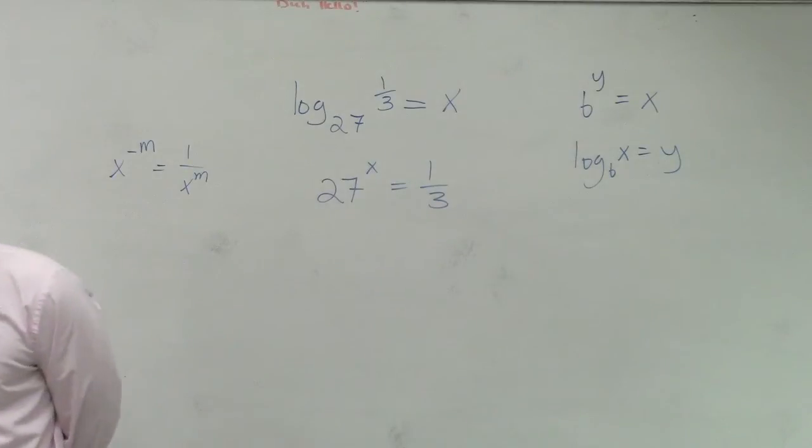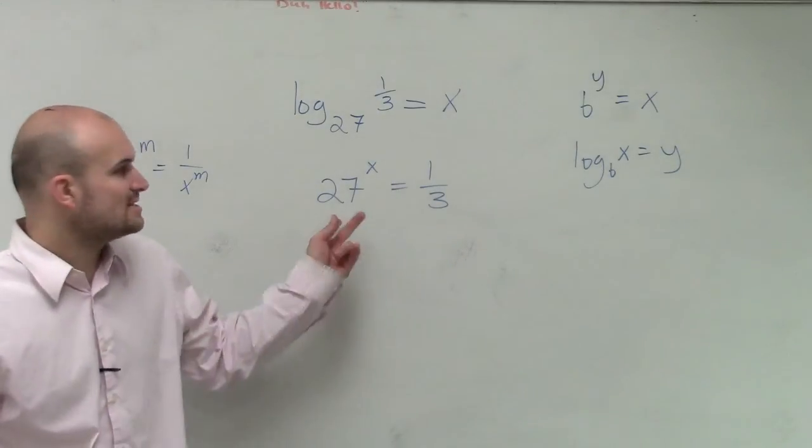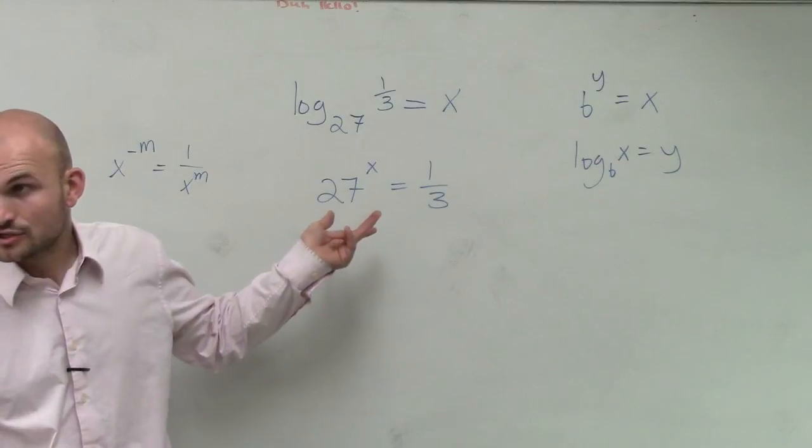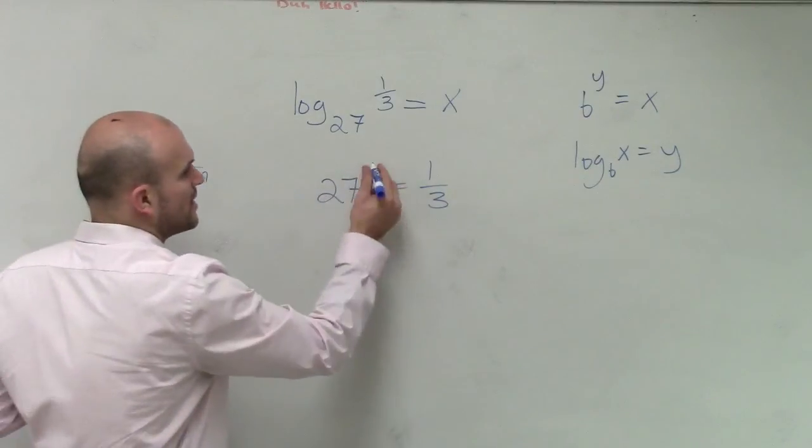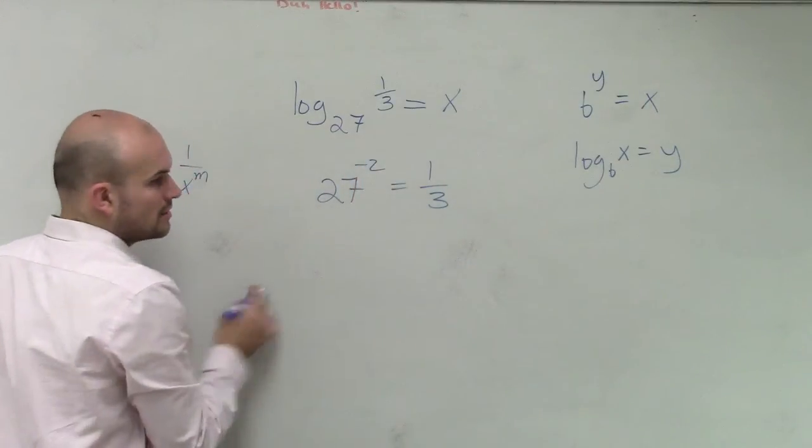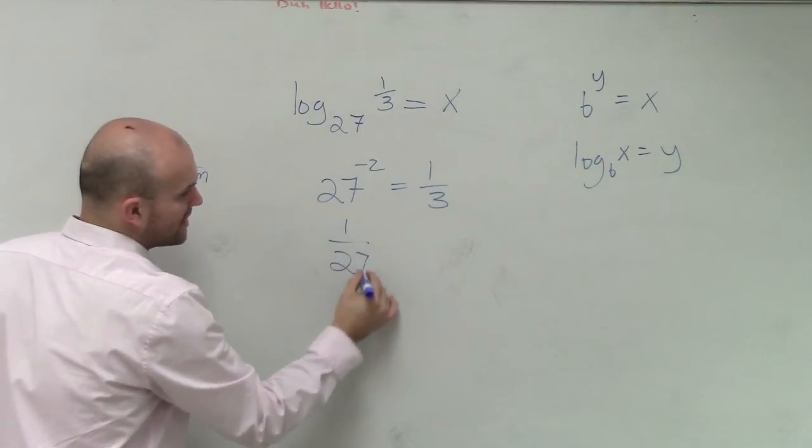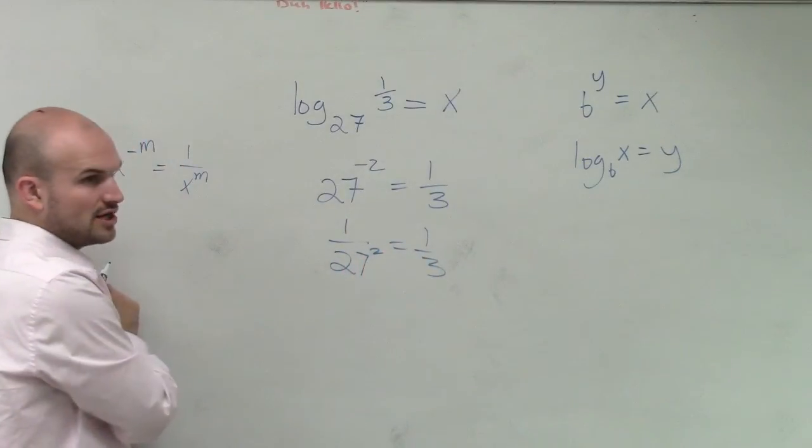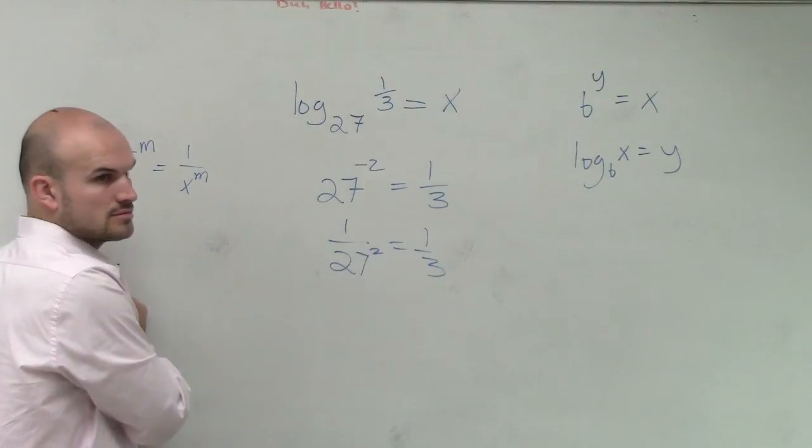Well, think about it. If it's greater than 1, so if it's 27 squared, so let's say it was negative 27 squared. So that means it's 1 over 27 squared equals 1/3. Are those going to equal each other? No.